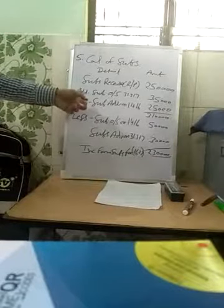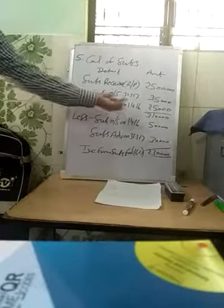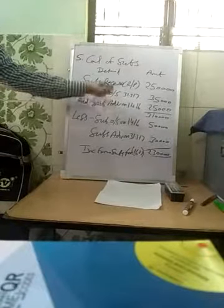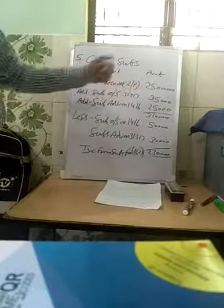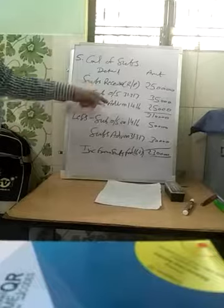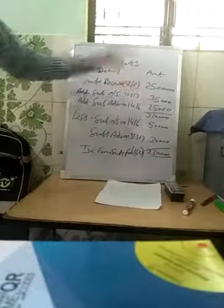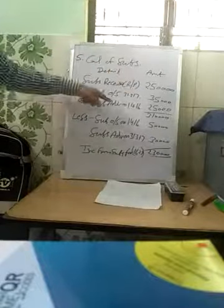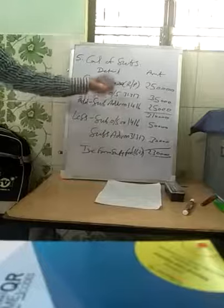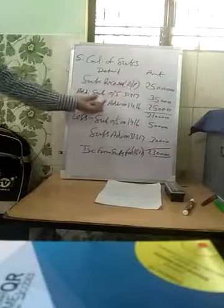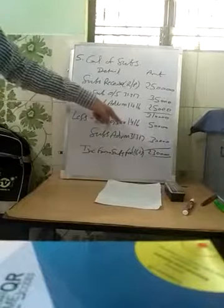Subscription advance on 1st April 2016 is the beginning advance. If outstanding at the end is plus, then advance at the beginning is also plus — vice versa. So subscription advance beginning Rs. 25,000 will be plus. And if outstanding at beginning is minus, then subscription advance at end is minus.